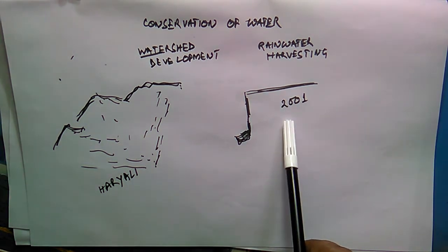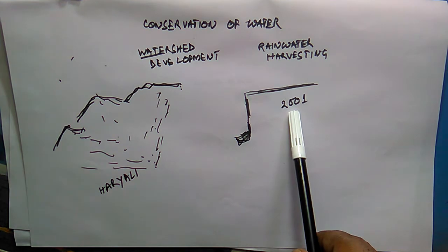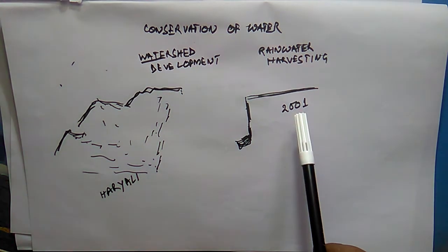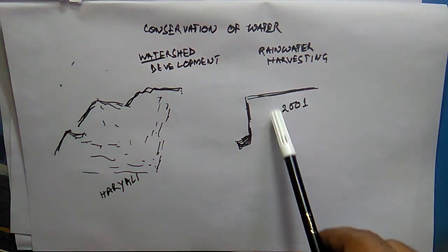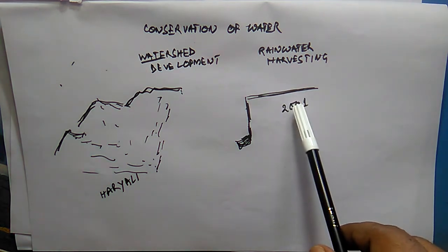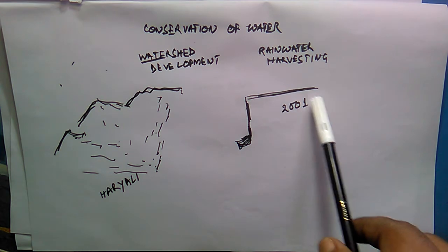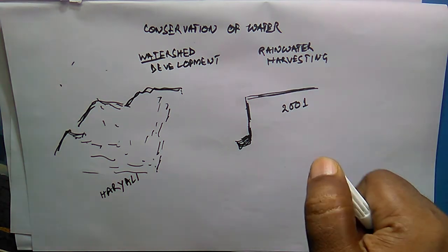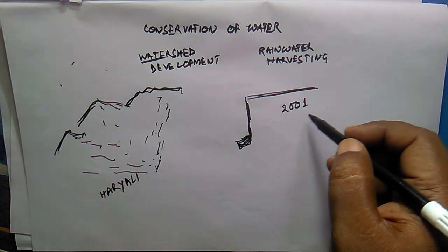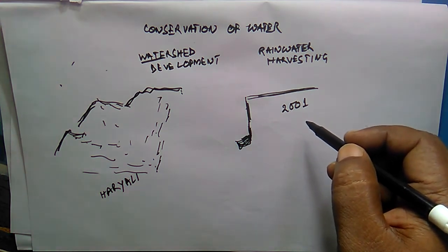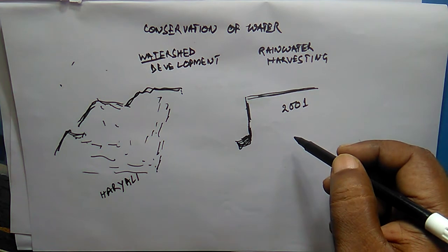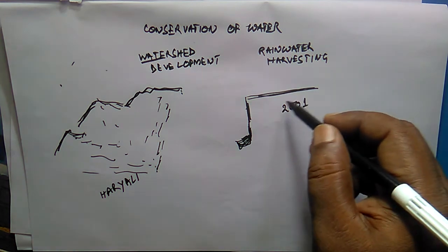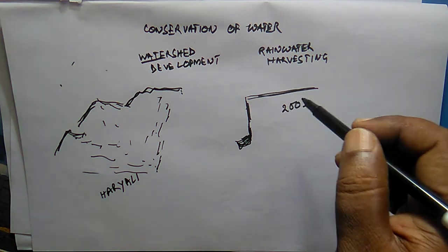In Tamil Nadu, since 2001 a law was passed where no new construction would be permitted without rainwater harvesting facilities. Though initially opposed, within five years the benefits were clear: Chennai, which was always prone to water shortages, benefited greatly. Groundwater levels increased drastically in Tamil Nadu, and as a result the Tamil Nadu model is now being followed in other parts of the country.